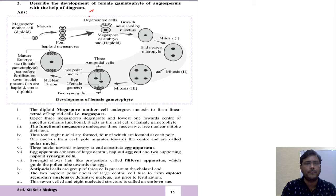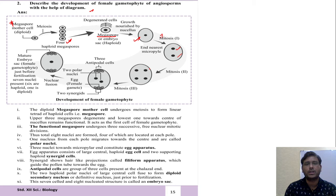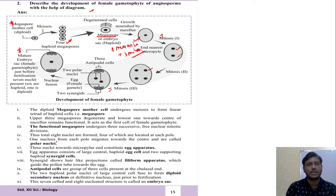Describe the development of female gametophyte of angiosperms with the help of a diagram. The megaspore mother cell undergoes meiosis to form 4 megaspores. Three degenerate and one functional megaspore is saved. The functional megaspore grows and undergoes 3 successive mitotic divisions: first producing 2 nuclei, then 4, then 8. This forms the 8-nucleate embryo sac. In angiosperms, the development of female gametophyte is endosporous — that is, within the megaspore.